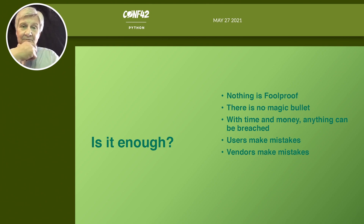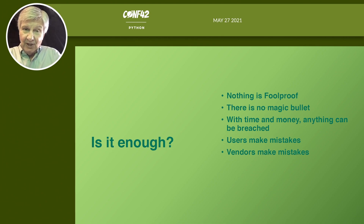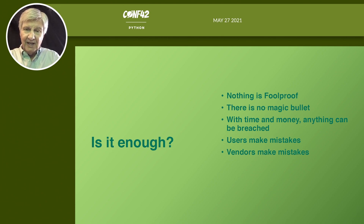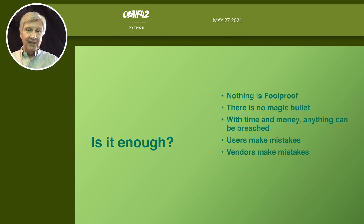By now, you might be asking: is that actually enough? Probably not — nothing's foolproof. There's no magic bullet. Given enough time and money, anyone can get into anything, and nation states have plenty of both. Users also make mistakes: even I, in a time crunch, once clicked on a phishing test email that looked exactly like our VoIP voicemail notification because I didn't notice it came from the wrong address — and instantly got sent to additional training.